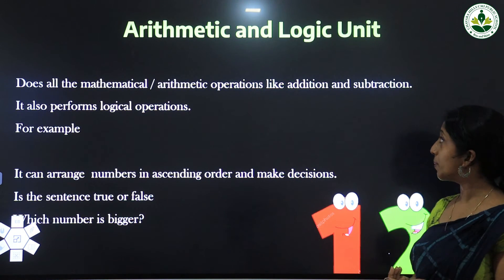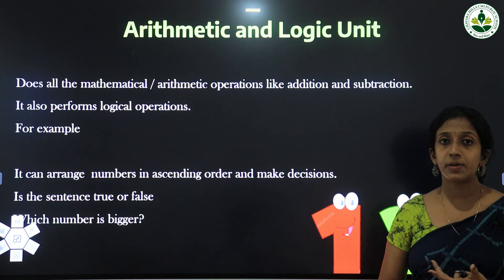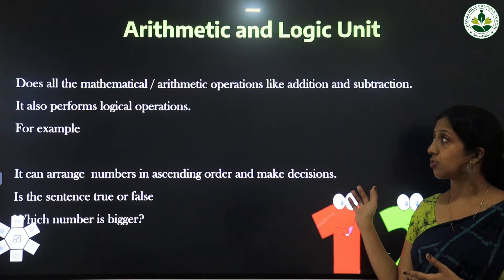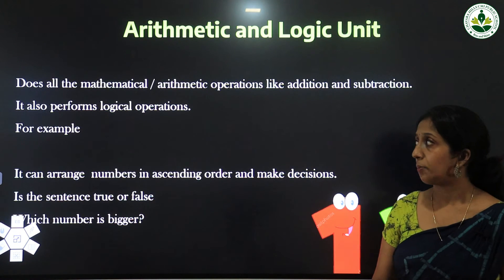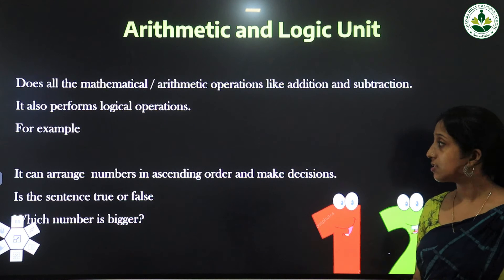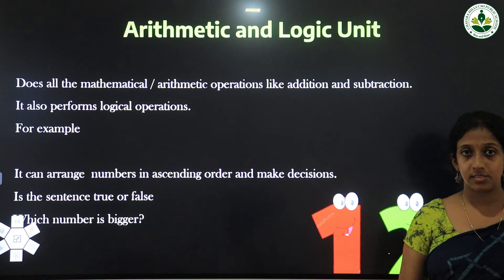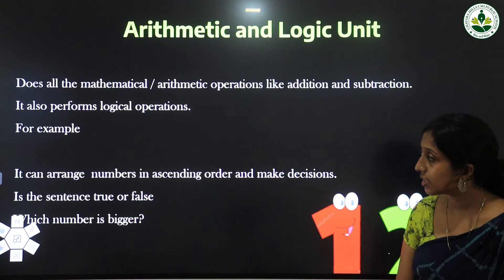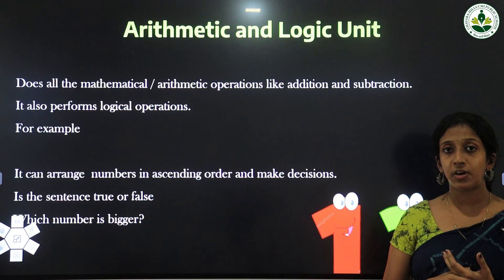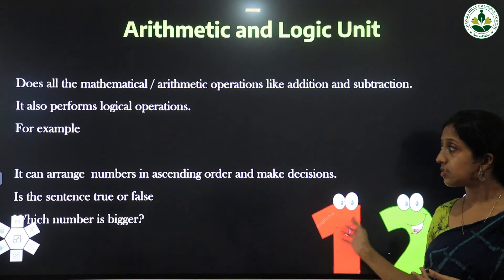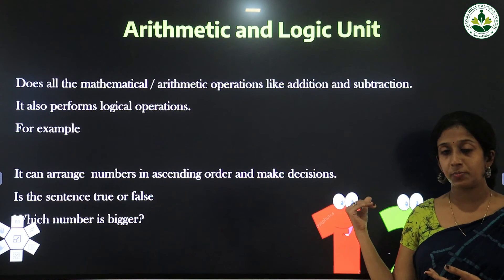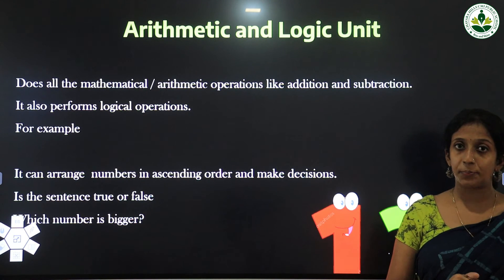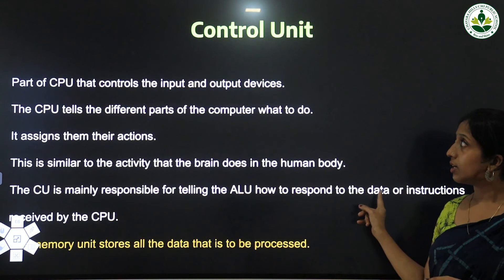The ALU, or Arithmetic and Logic Unit, does all the mathematical operations like addition and subtraction. It also performs logical operations — for example, it can arrange numbers in ascending order, make decisions, find whether a sentence is true or false, and determine which number is bigger or smaller. All mathematical and logical operations take place in the ALU.